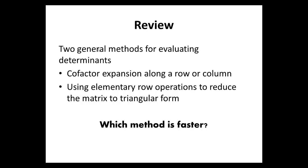Review. In 3.1 and 3.2, we have encountered two general methods for evaluating or finding the determinant of a matrix. 3.1 introduces us to cofactor expansion along a row or a column. 3.2 introduces us to using elementary row operations to reduce the matrix to a triangular form. Which method is faster? If you were not forced to use any of these, or if you were given the option to choose one and use in a problem, which one would you prefer? Cofactor expansion or elementary row operations? We'll talk about this some more in class. Thank you.